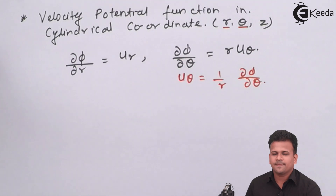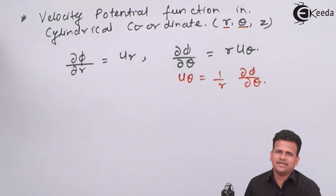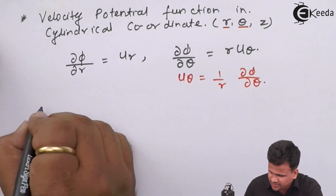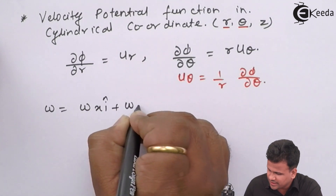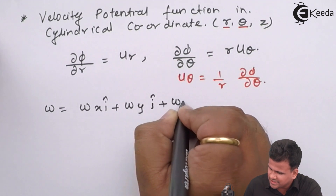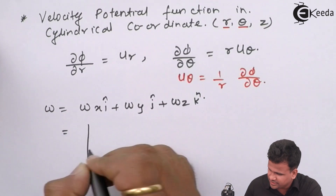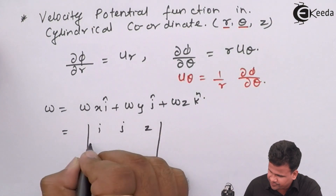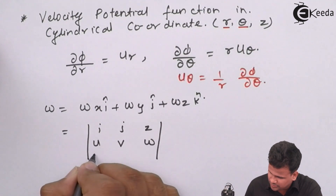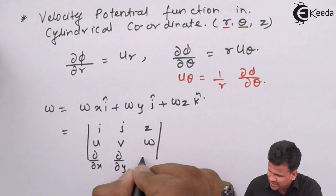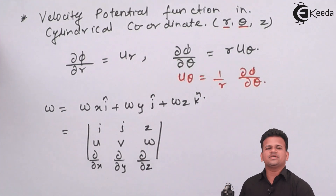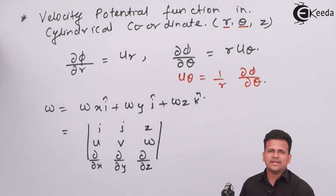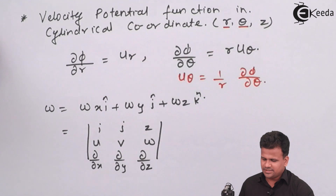We have already studied rotational flow and irrotational flow. For that, we have seen that omega equals omega_x i-cap plus omega_y j-cap plus omega_z k-cap. This can be written as the determinant of i, j, k and u, v, w with partial derivatives d/dx, d/dy, and d/dz. This is the equation to determine whether the flow is rotational or irrotational. Now let us see this equation in relation to the velocity potential function.